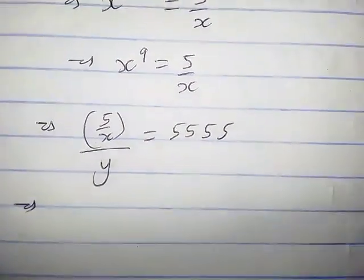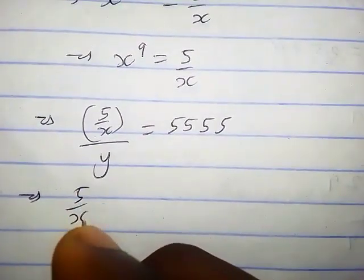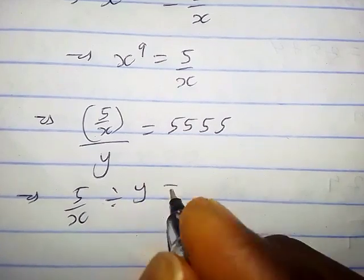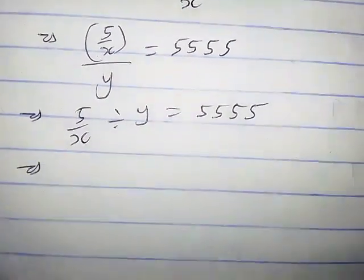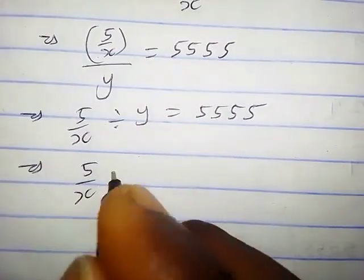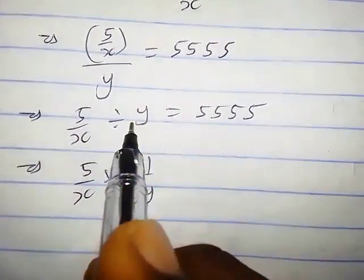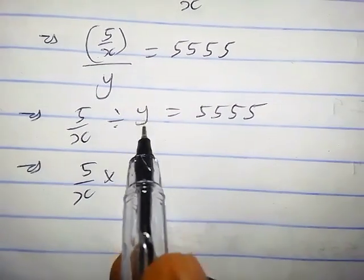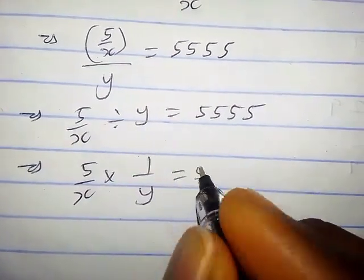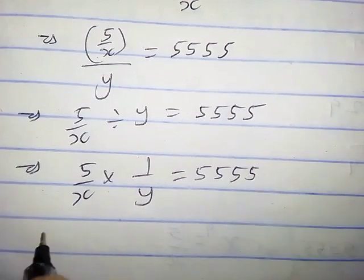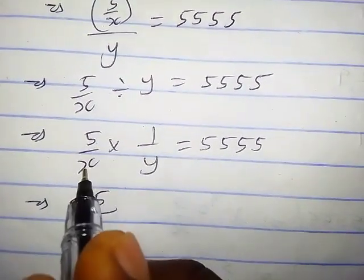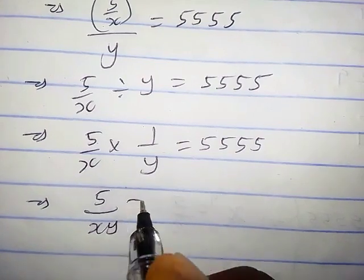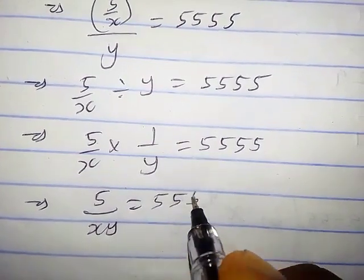This also implies that 5 over x times 1 over y, because division just changed to multiplication when we take the inverse of y, so it equals 5555. So we're gonna have 5 times 1 over xy equals 5555.